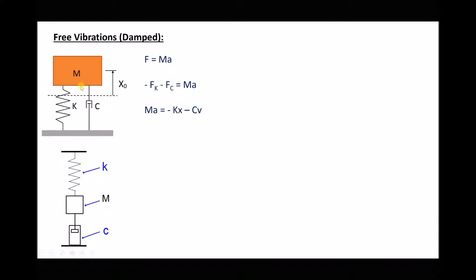In both of these systems there are two forces acting on the mass: we have the force from the spring, f subscript k, and we have the force from the damper, f subscript c. The formula expanded gives us: mass times acceleration equals minus kx minus cv. Here k is the spring stiffness and x is the displacement of the object; c is the damping coefficient and v is the velocity of the object. The spring is acting in terms of the displacement, trying to return the object back to the centre line, whereas the damper is acting on the velocity — the force due to damping is a product of the velocity.